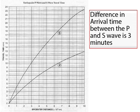So we know the difference in the arrival time. That's all we need to know to come to the P and S wave chart and find out how far away the epicenter was. I measure out three minutes over here on the scale for time.